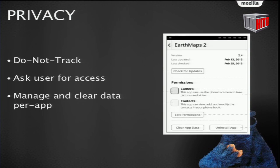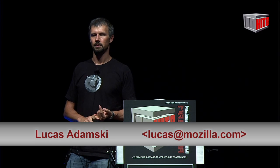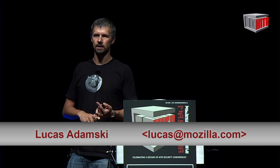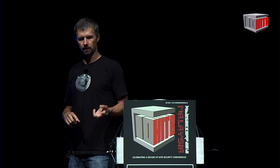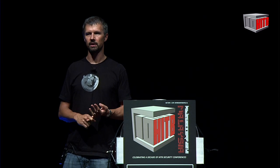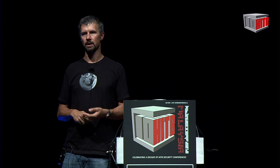We think a lot about privacy in this model. The primary thing is that we always ask for access to privacy-sensitive APIs — location, contacts, camera — unless it's a certified app. There are no surprises: if an app gets access to your contacts, it's only because you granted it. You can always change those settings, clear app data, and all data is erased when you uninstall an application.